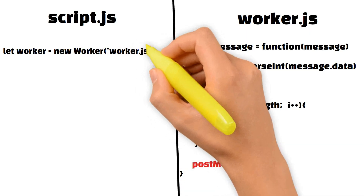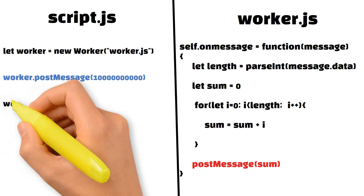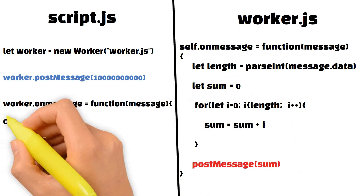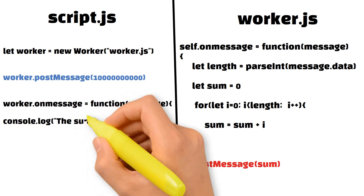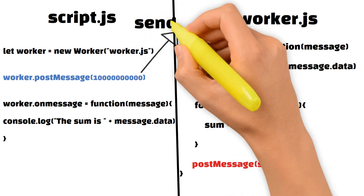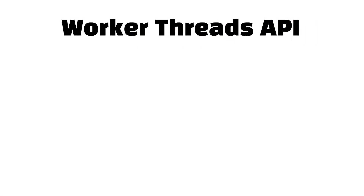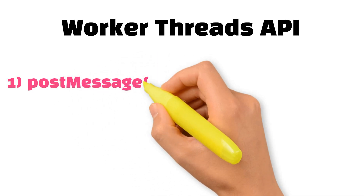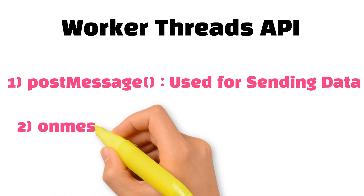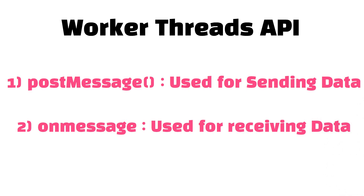Inside script.js, we store the worker object and post a message — for example, one billion — to worker.js using postMessage. When worker.js finishes, it sends the result back to the main UI thread using postMessage, and we receive it via the onmessage event handler. So to summarize: the worker thread API provides two key methods — postMessage, to send data between threads in either direction, and onmessage, the event handler to receive that data.